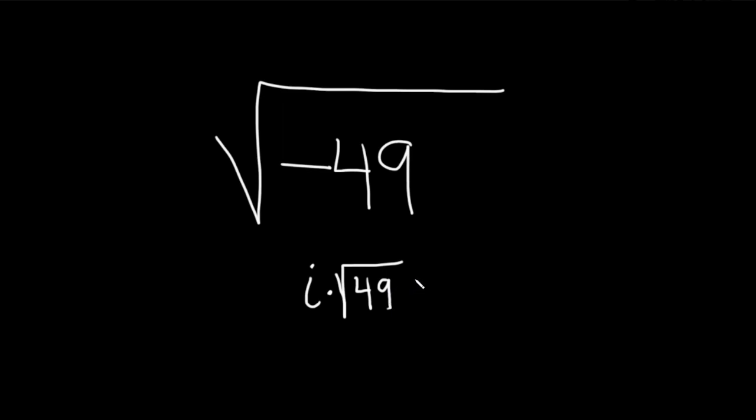Now, the square root of 49 is 7, so this is actually equal to i times 7. However, nobody really leaves their answer like this, so you want to put the i at the end, so this is really 7i. And so that would be the answer.